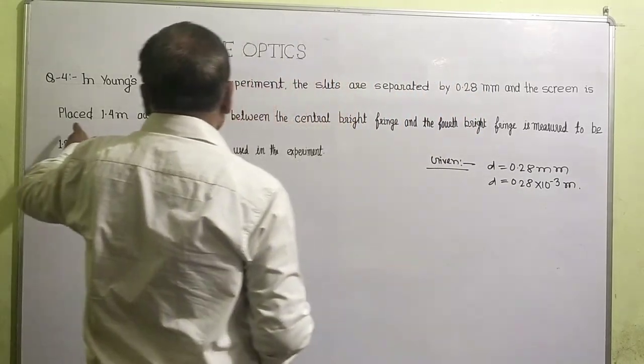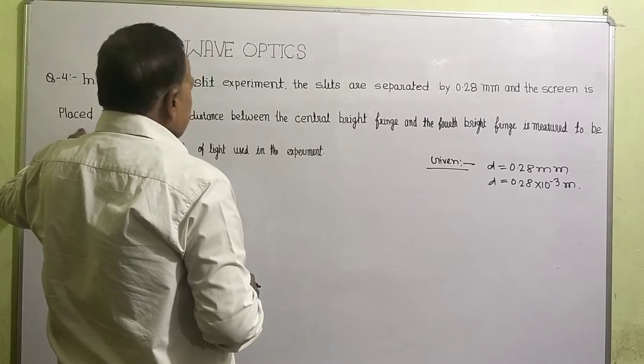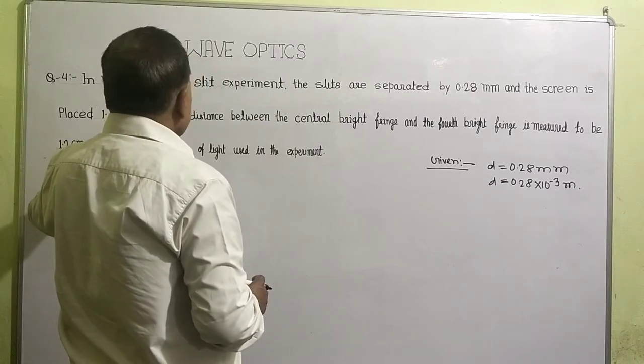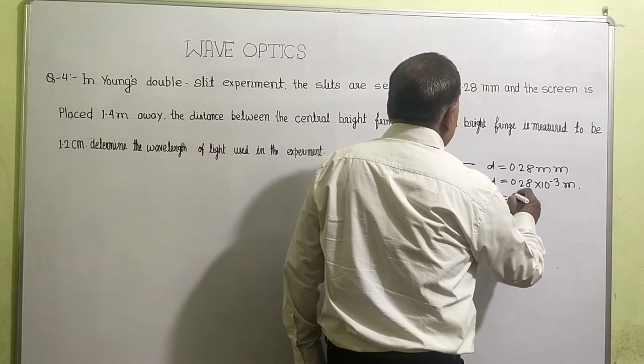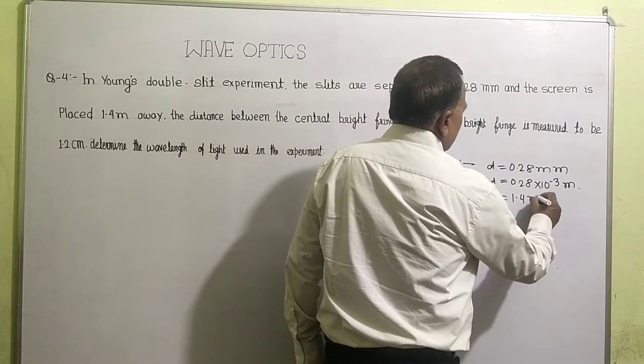Now, the second parameter is that the screen distance from the slit is 1.4 meter, and capital D is given 1.4 meter.